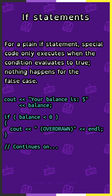For example, let's say we have cout 'your bank balance is', and then we print out the balance variable. Afterwards, we have: if balance is less than zero, then we also cout 'overdrawn'. Otherwise, nothing additional happens, and then the program continues on.